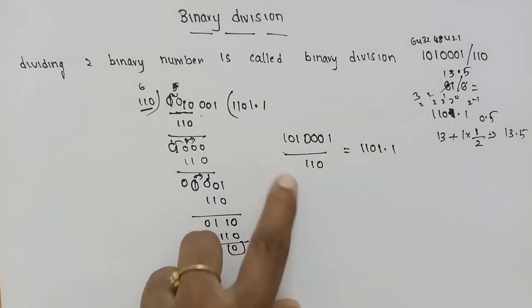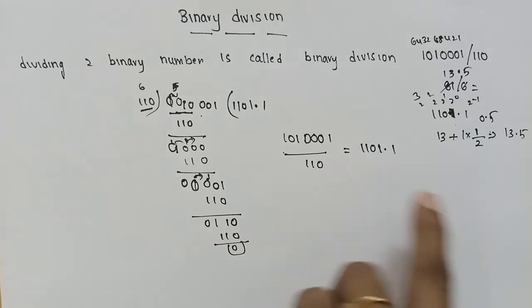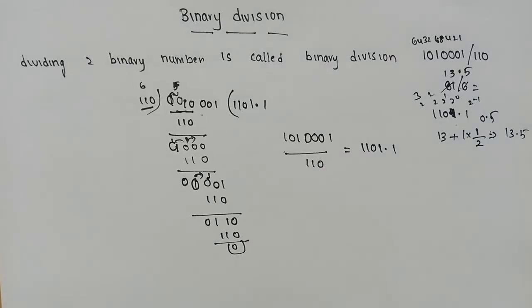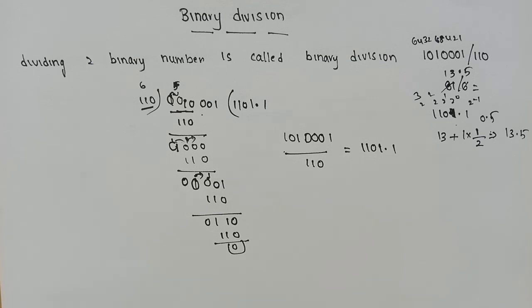81 divided by 6 equals 13.5. My result is 13.5, and it's done. We need to do binary division — thank you for watching.